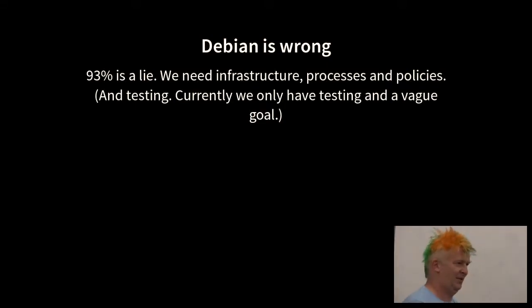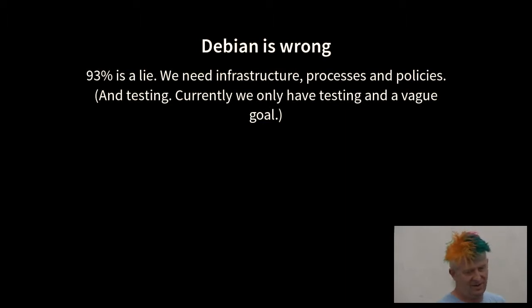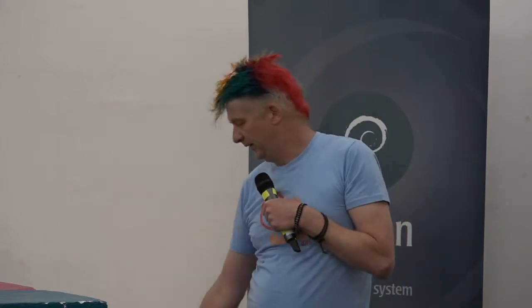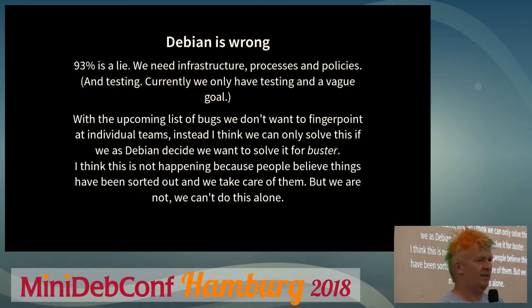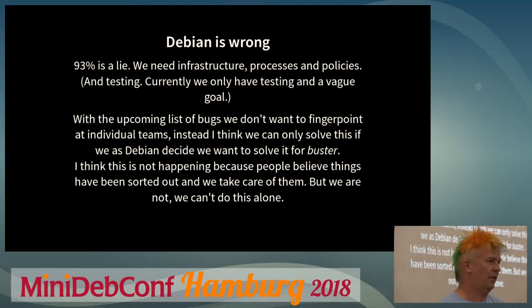Debian is doing things wrongly. This 93% figure is a lie. We need infrastructure, processes, and policies. At the moment, policy says packages should be reproducible, but there should be a policy that says packages must be reproducible, with security requirements in place. What we have is testing, a vague goal, and no hard requirement — so who cares? There's an upcoming list of bugs, and with that we don't want to finger-point at teams but make clear what's missing. Most things we cannot do alone, even with an FTP team member on board, and changes must come from Debian as a whole.